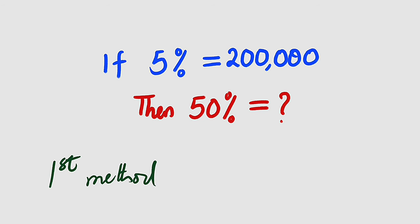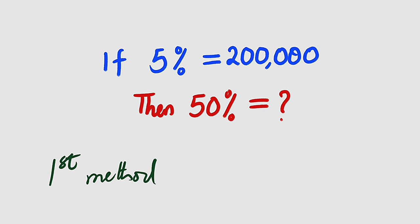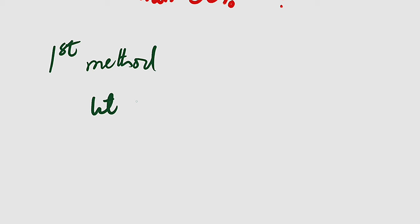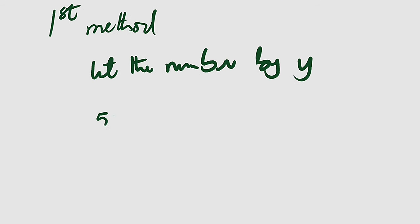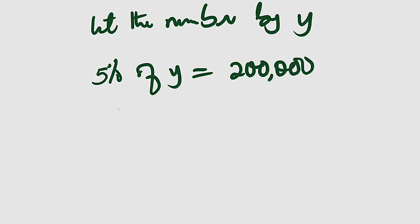Let the number be y. Therefore five percent of y is equal to two hundred thousand. Then five percent, remember, is the same thing as five divided by 100, of its multiplication y. This is equal to two hundred thousand.